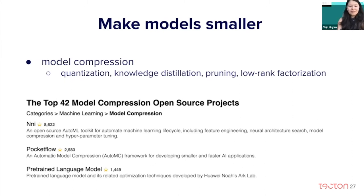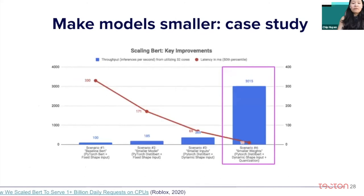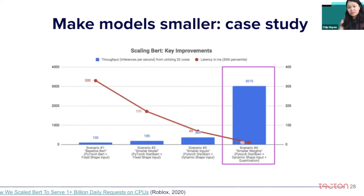There are many model compression open source projects out there, and more have been coming out. If you're interested in making models smaller and faster, I highly recommend checking out the Roblox blog post. By using different techniques for model compression and inference optimization, they were able to improve their latency by about 30 times.